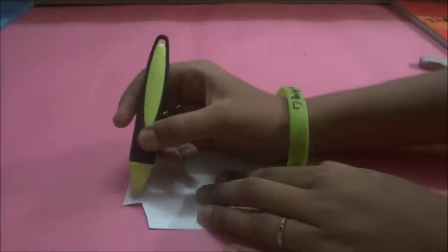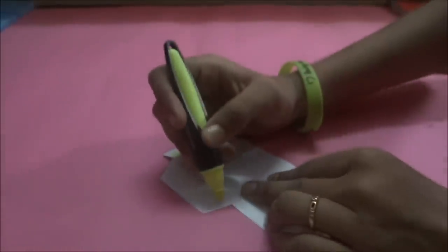After cutting, you have a shape that looks like this. What you are going to do is apply glue to this area and to this area.